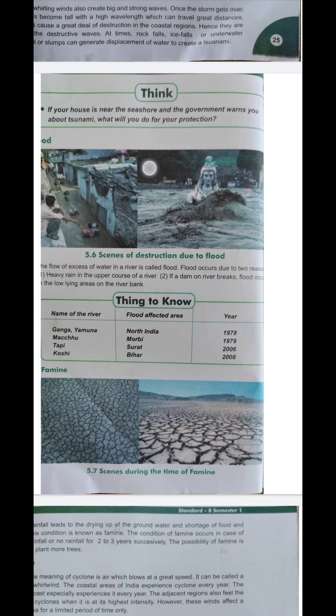Now the scenes during famine — the dry and barren land shown here represents famine. Scarcity of rainfall leads to the drying up of groundwater and shortage of food and water. Due to lack of rainfall, the land becomes completely dry. No plantation, no farming, and no water supply is possible. This condition is called famine.